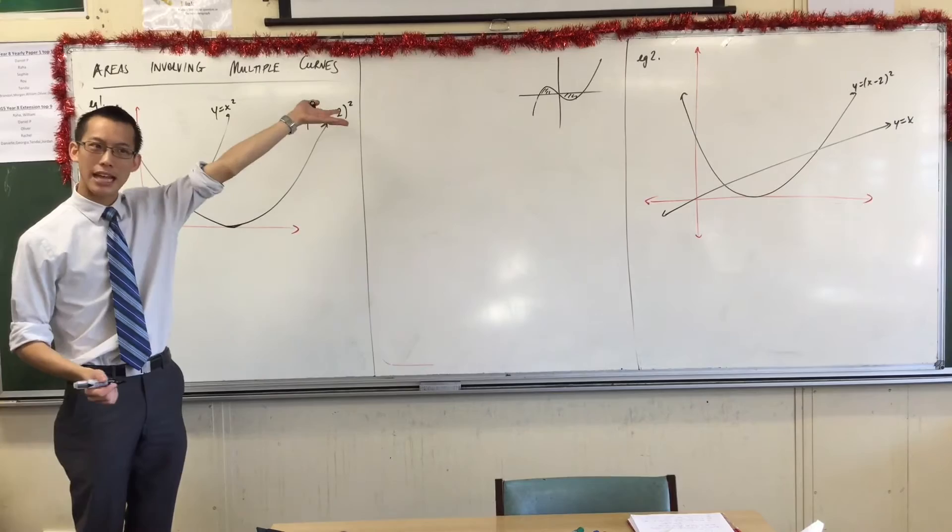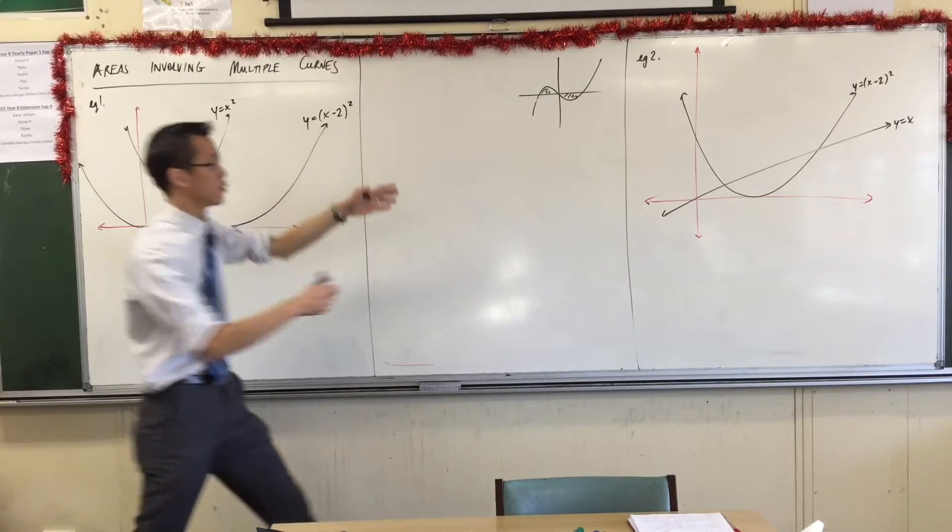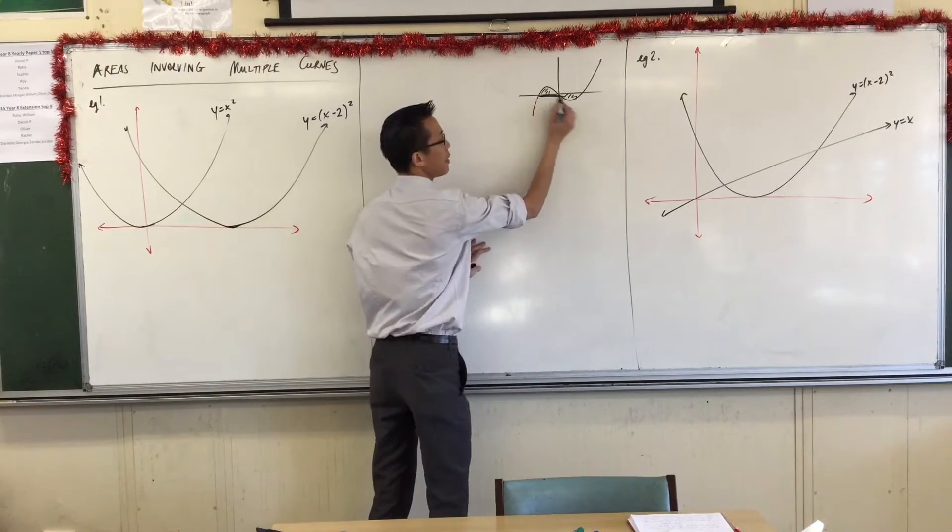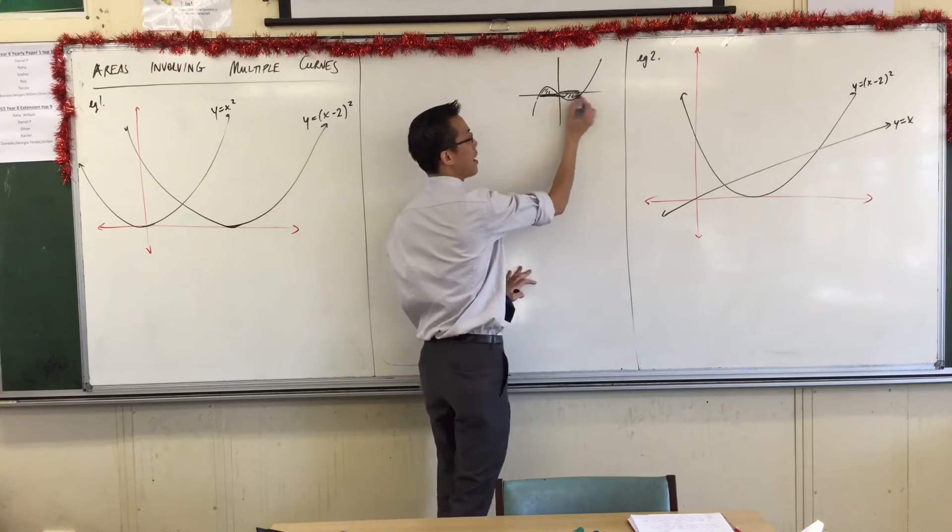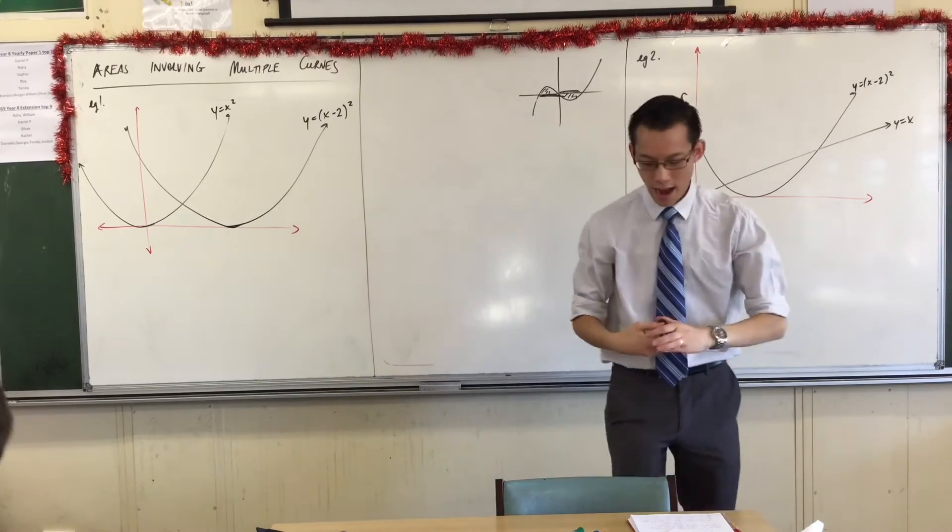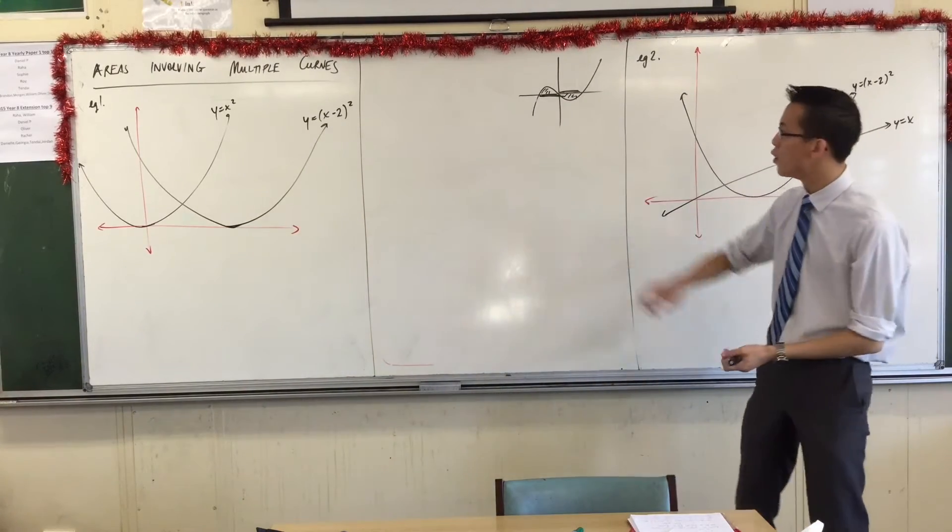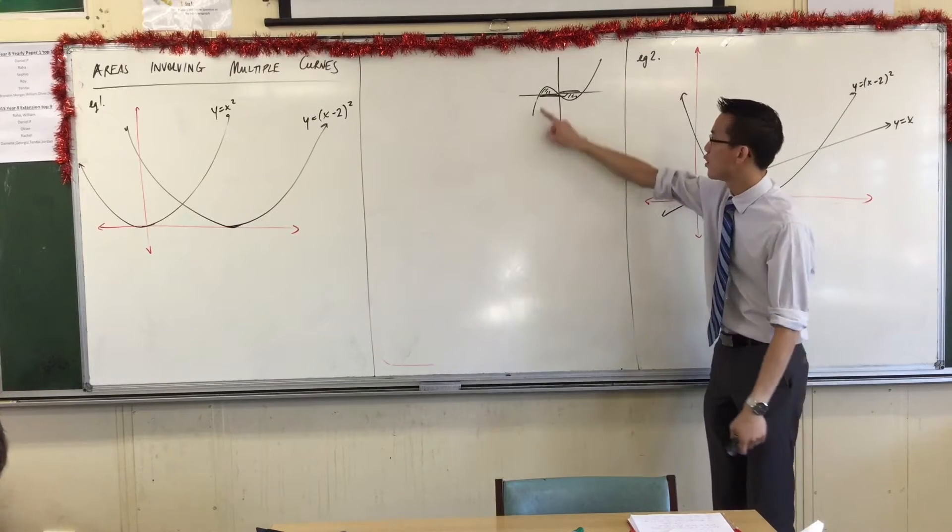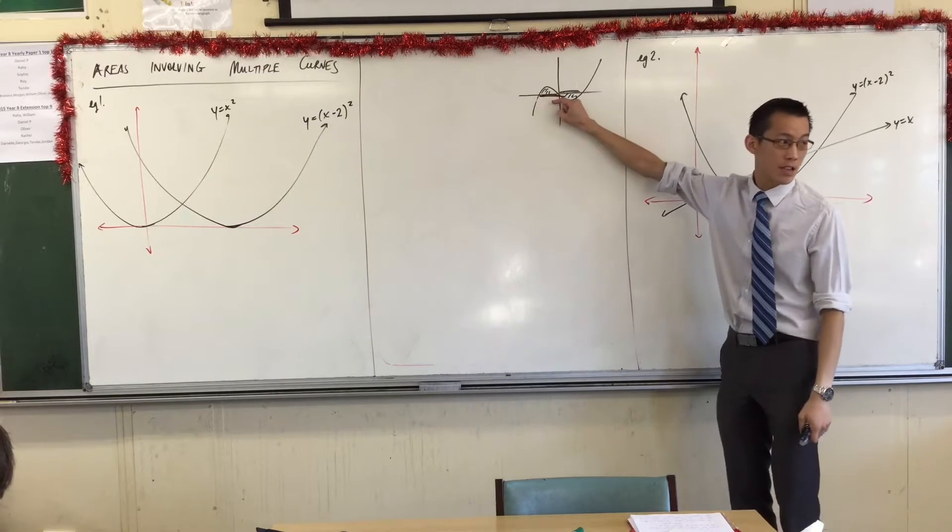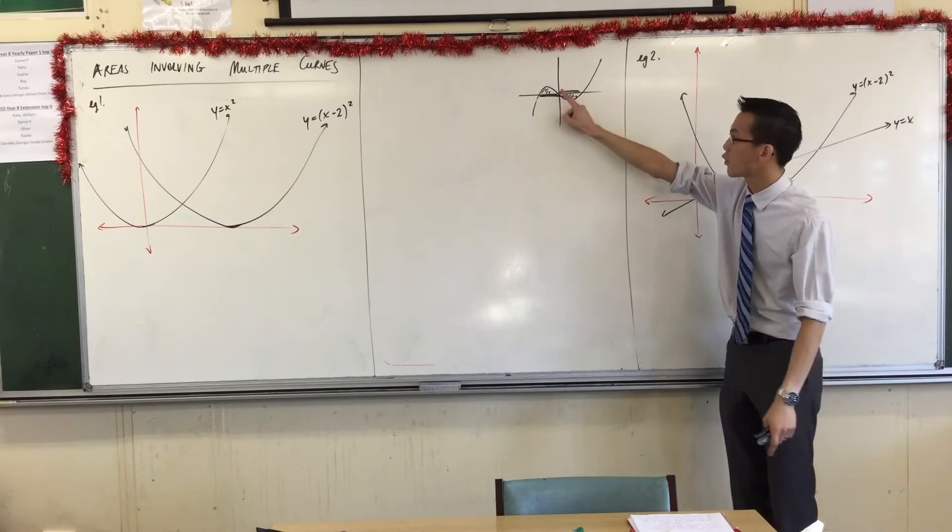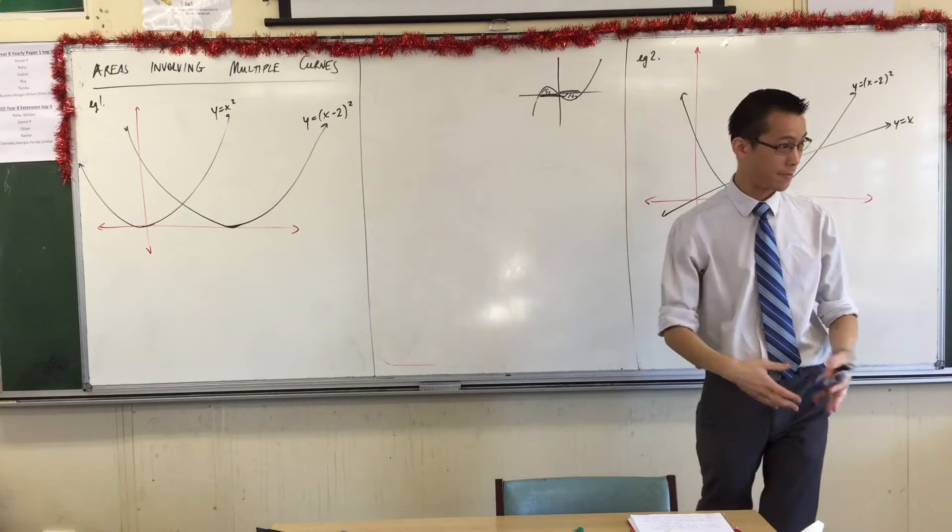So therefore, we consider an area like this as two integrals. We do this little part here, and then we would do this part, and we treat them separately. We call this integrating over separate intervals. So you'd maybe go from negative 1 to 0, there's your first interval, and then you go from 0 to 1, and you treat them separately.